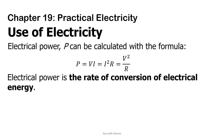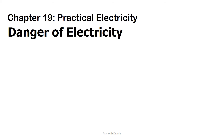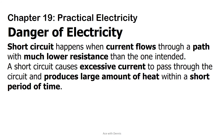Electrical power is the rate of conversion of electrical energy. The SI unit of electrical power is watt, W. Short circuit happens when current flows through a path with much lower resistance than the one intended. A short circuit causes excessive current to pass through the circuit and produces a large amount of heat within a short period of time.